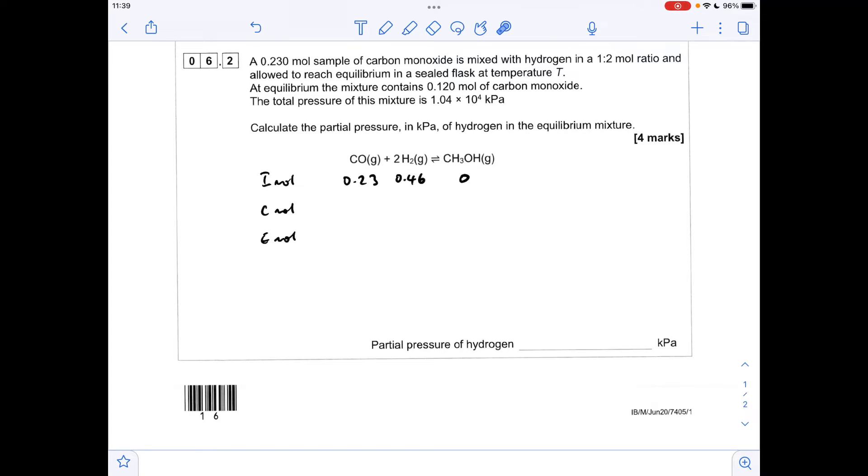The initial moles of carbon monoxide is 0.23 moles. We're told it's mixed with hydrogen in a one to two mole ratio, so there's going to be twice as many moles of hydrogen, and initially, there are no moles of methanol. We're also told that the equilibrium mixture contains 0.12 moles of carbon monoxide. To go from 0.23 to 0.12, it's lost 0.11 moles - that's how many moles have reacted.